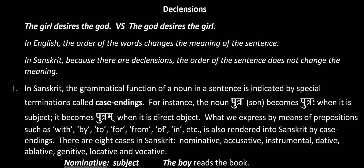In bold italics under the title 'Declensions' I have two sentences: 'The girl desires the god' and 'The god desires the girl.' They're the same — both sentences have the same types of words and the same number of words — but just because of the order, both of these sentences have a completely different meaning.